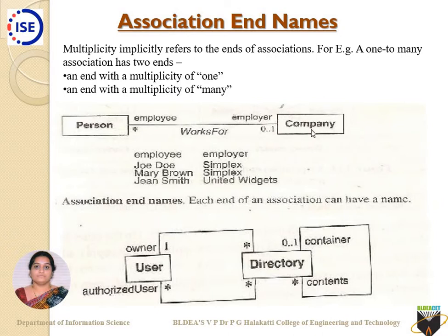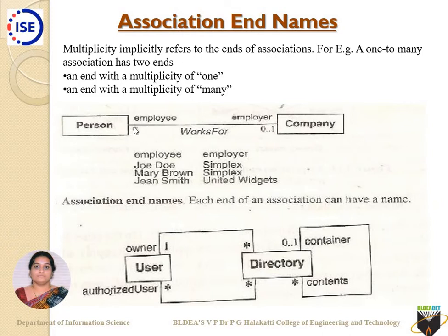If I am speaking about what role is played by a company — companies are the hirers of these persons — so I call them 'employer.' This is the association name; these are association end names. Then comes 'cardinality,' or another term: 'multiplicity.' Multiplicity is shown by values such as 0, 1, 2, 3, 4, and so on with dot notation, or it can be asterisk. Asterisk stands for many relationships. Here, on the Person side I have asterisk, and on the Company side I have 0..1. So a company can have many number of employees.